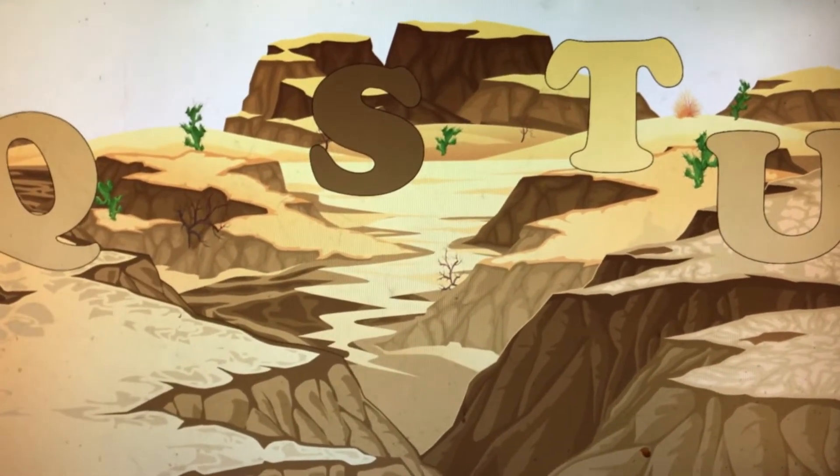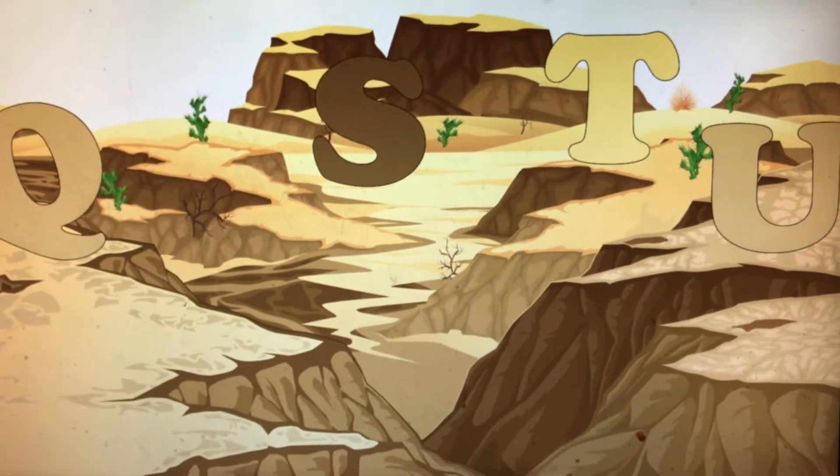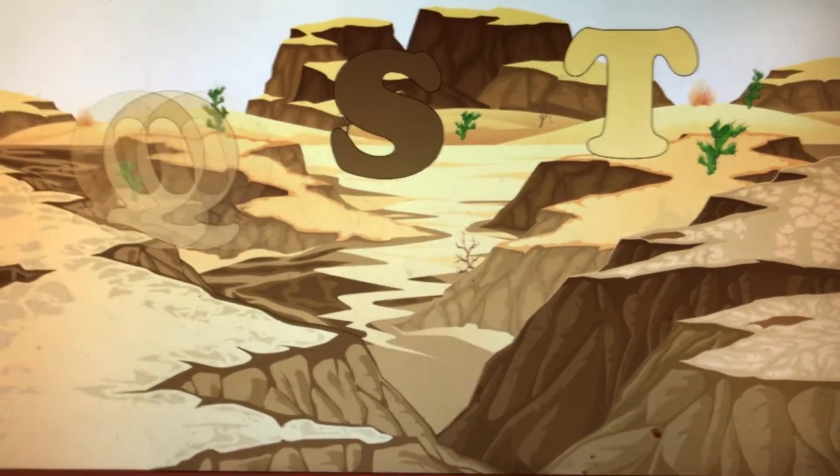The letter R ran away from the canyon. The letter U ran up to space. And the letter Q ran away too.